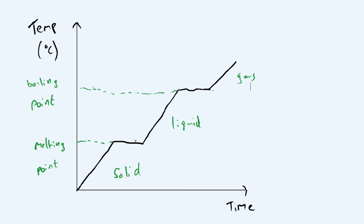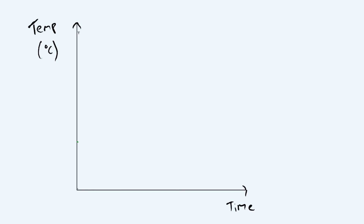You might also see graphs the other way around, showing cooling rather than heating — so you're removing energy from the system. Starting as a gas, the temperature is high, but as you cool it the temperature goes down until it's about to turn into a liquid. Then the temperature stays flat while it's turning into a liquid, because energy is being released as bonds form between the particles. Then the temperature goes down again until it's ready to become a solid, where again the temperature holds flat as stronger bonds form between particles.